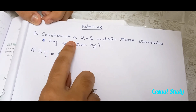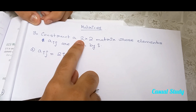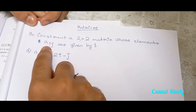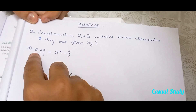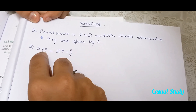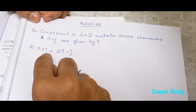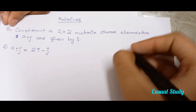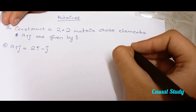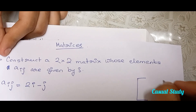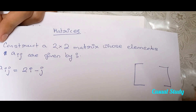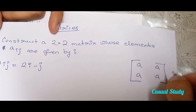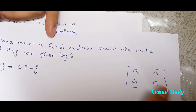Construct a matrix that is 2 by 2 whose elements A[i,j] are given by A[i,j] equals 2i minus j. So we are going to take an example of a matrix that is basically 2 by 2.